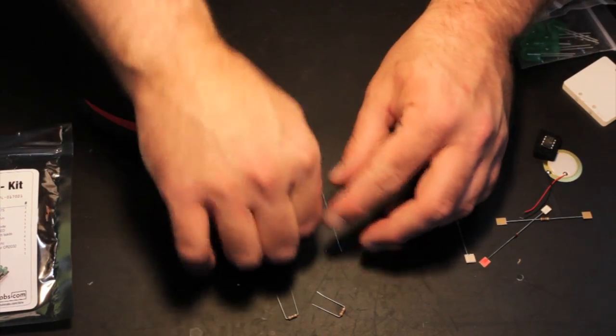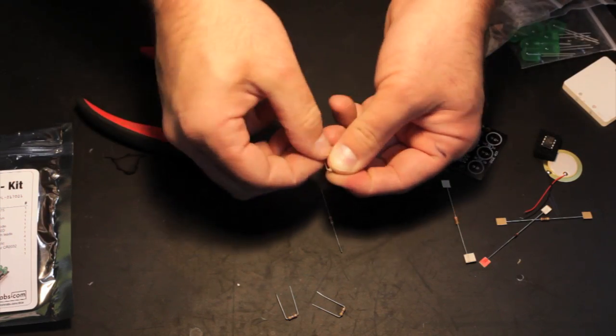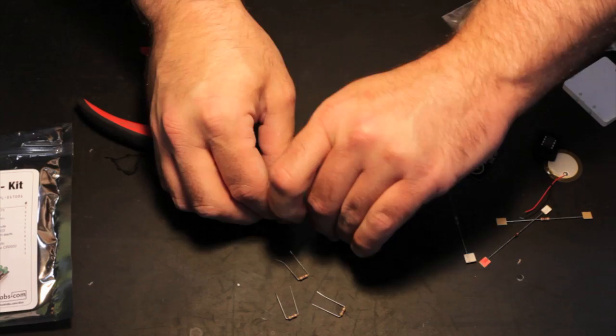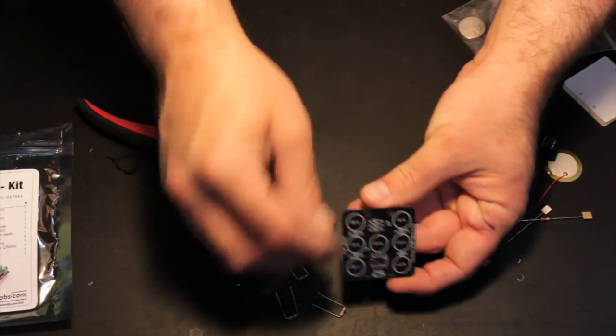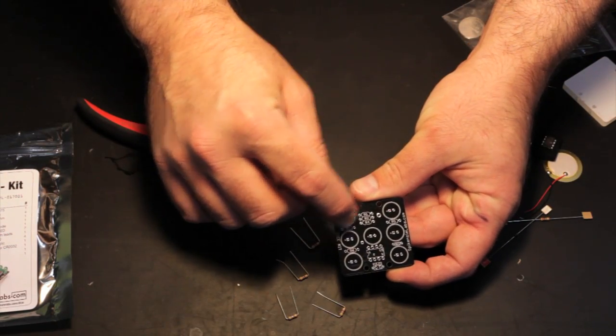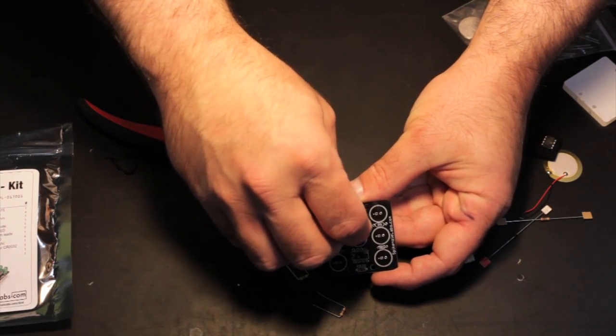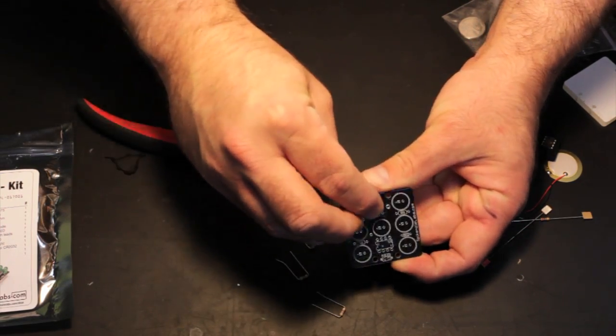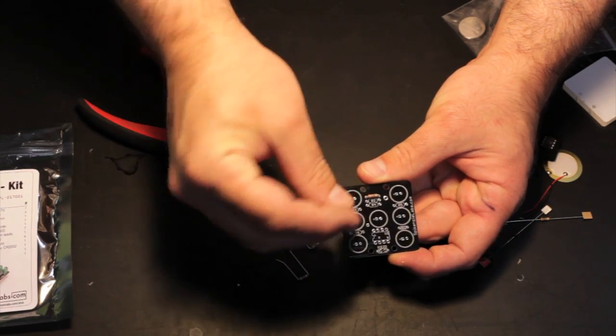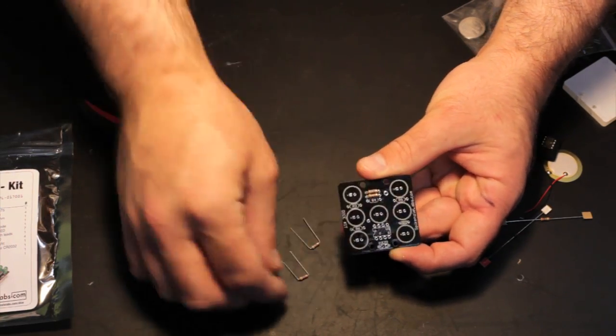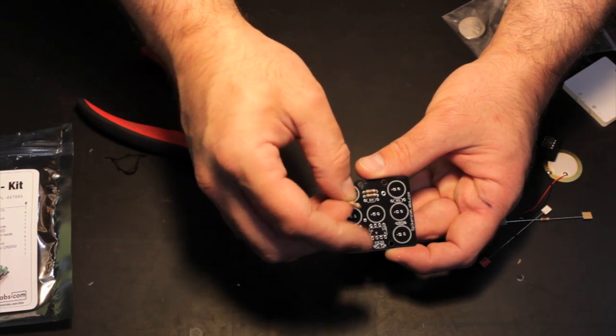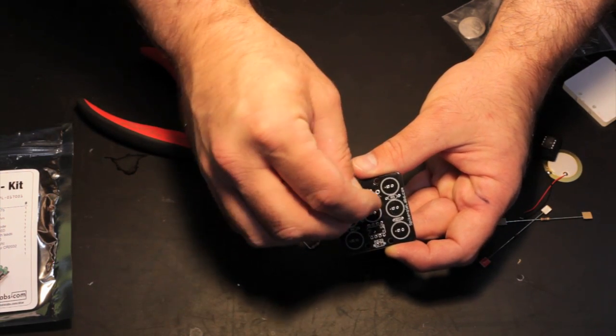These resistors are going to be placed into R1, 2, 3, and 4 on the PCB. Locate R1, 2, 3, and 4 and start installing these resistors onto the PCB. They don't have a particular way going in, however, I like to have the resistors going in the same direction only because it makes it look a little bit prettier.